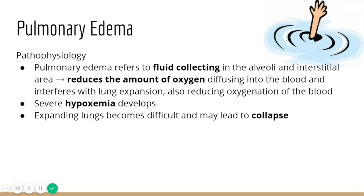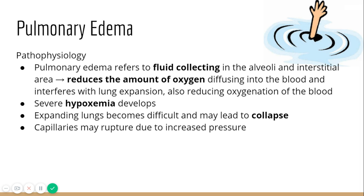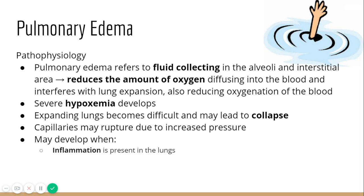Sometimes the expansion of the lungs becomes difficult because of this fluid accumulation, and that can lead to collapse of lung — either a portion or a major chunk. The pressure happening within the lungs because of this fluid is going to lead to our capillaries rupturing, and we will see that as one of the symptoms: coughing up blood-tinged sputum.